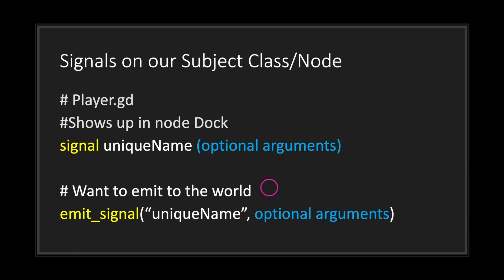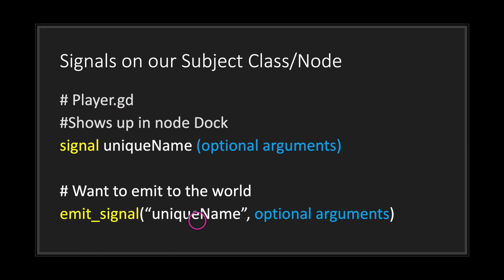When you want to emit a signal, use the emit_signal method. Pass the signal name as a string — it must be inside double quotations — followed by any optional arguments. One important thing: no error will be thrown if you use more or fewer arguments than declared in the signal declaration. So as a programmer, double-check that you're sending the correct arguments to your observers.